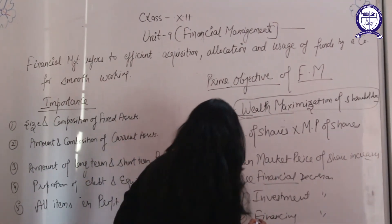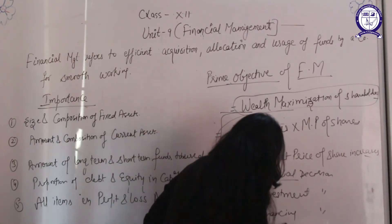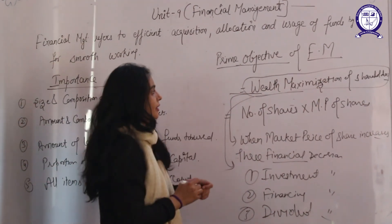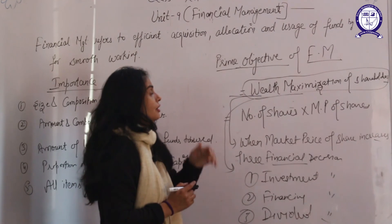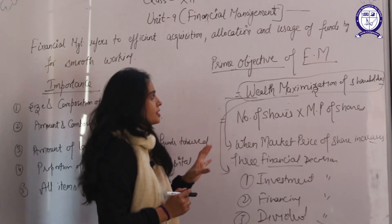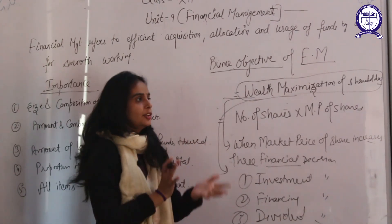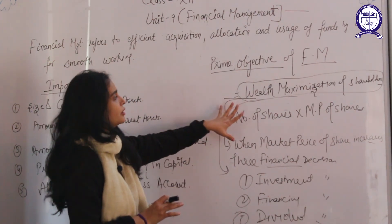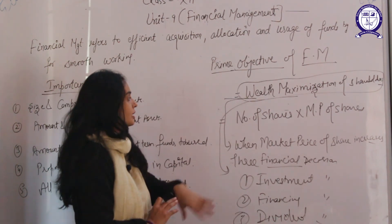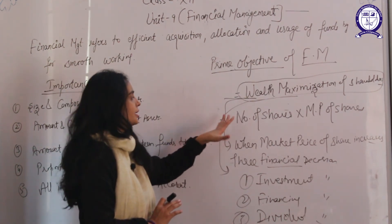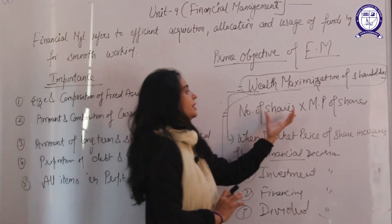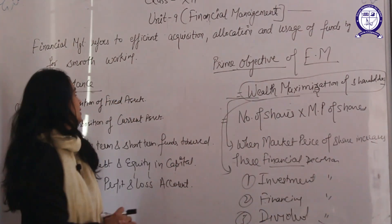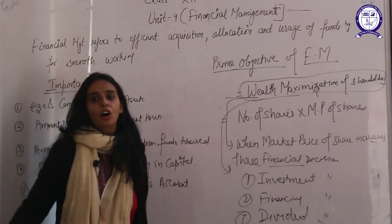Other objectives of financial management include: finance should be available at the time of need, resources should not be wasted, and money should be invested into profitable projects. The main objective remains wealth maximization of shareholders, calculated as number of shares multiplied by market price per share. Thank you — this was about the concept, importance, and objectives of financial management.